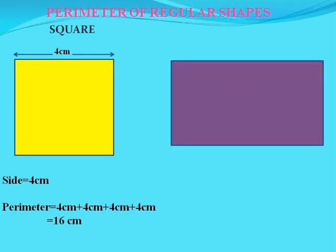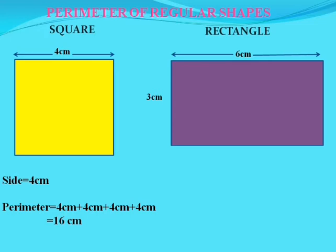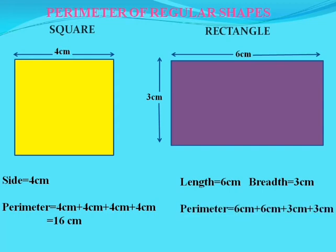Let's take a rectangle having length 6 cm and breadth 3 cm. Now we can find out the perimeter, which is 6 cm + 6 cm + 3 cm + 3 cm — the sum of all sides — which becomes 18 cm.